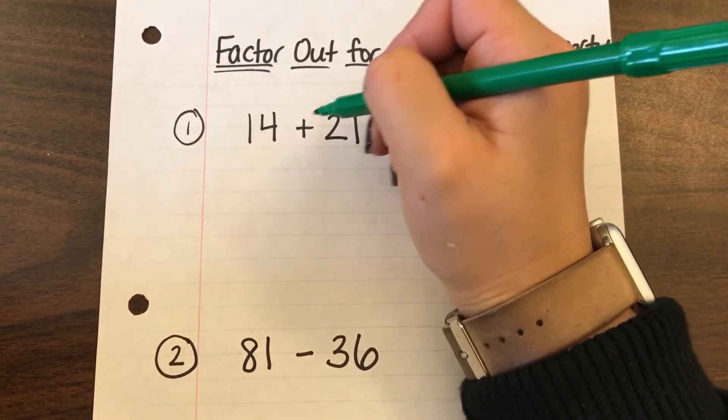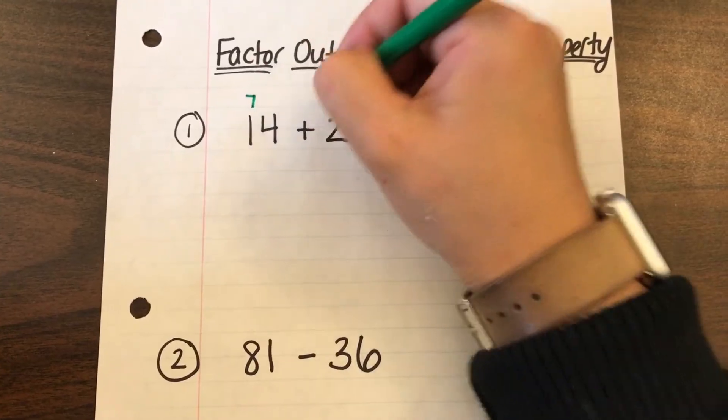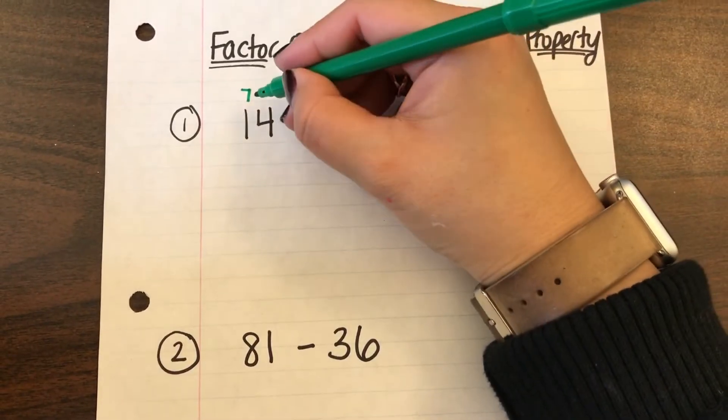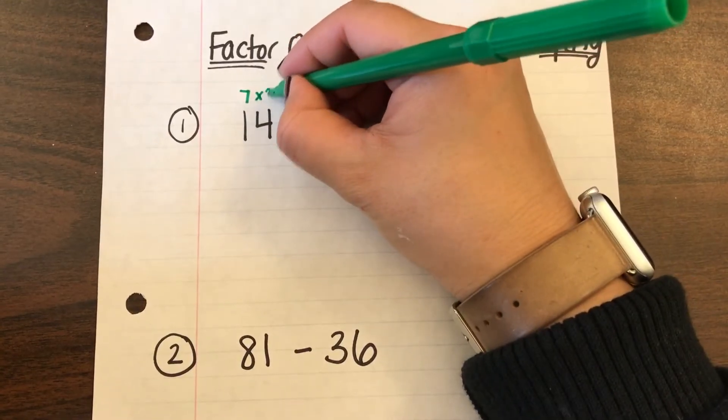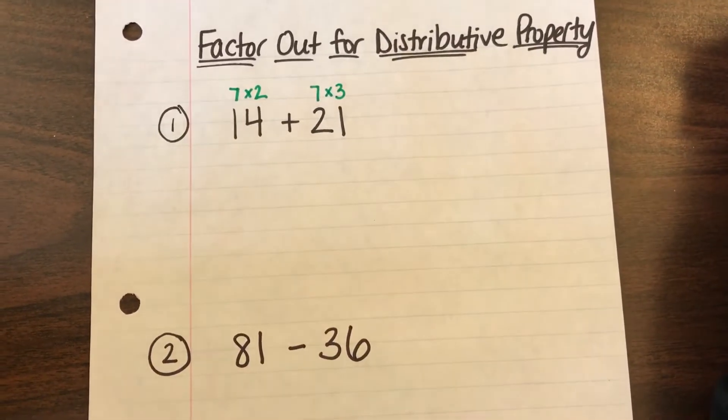So I know looking at 14 and 21 that 7 can go into both. So I'm going to write it right above. Now for 14 I know that 7 times 2 gives me 14 and for 21 I know that 7 times 3 gives me 21.